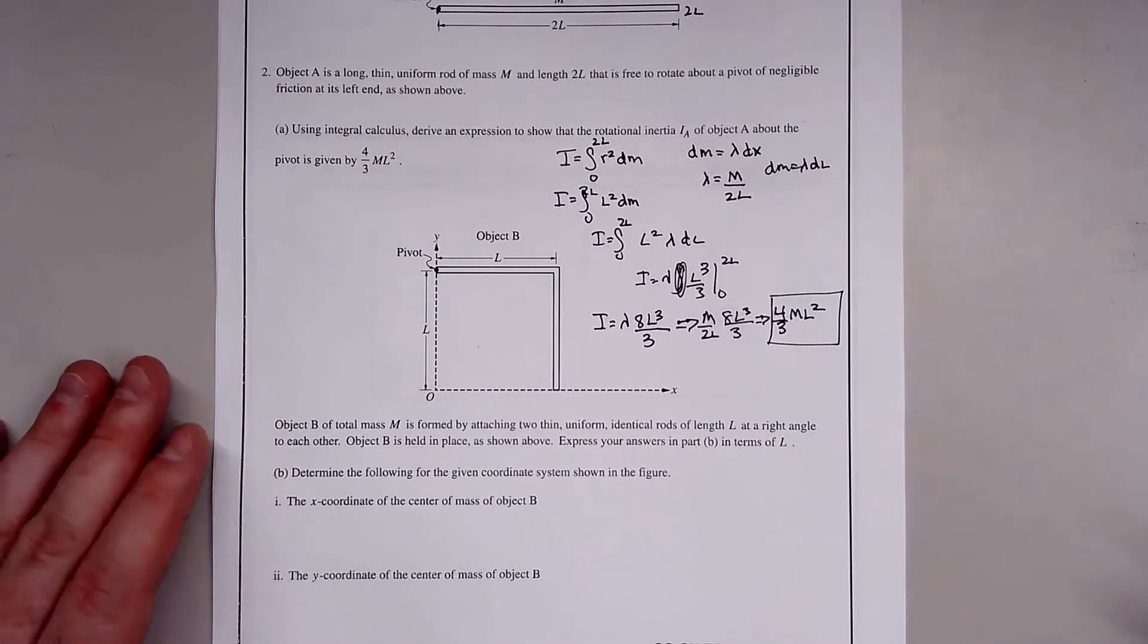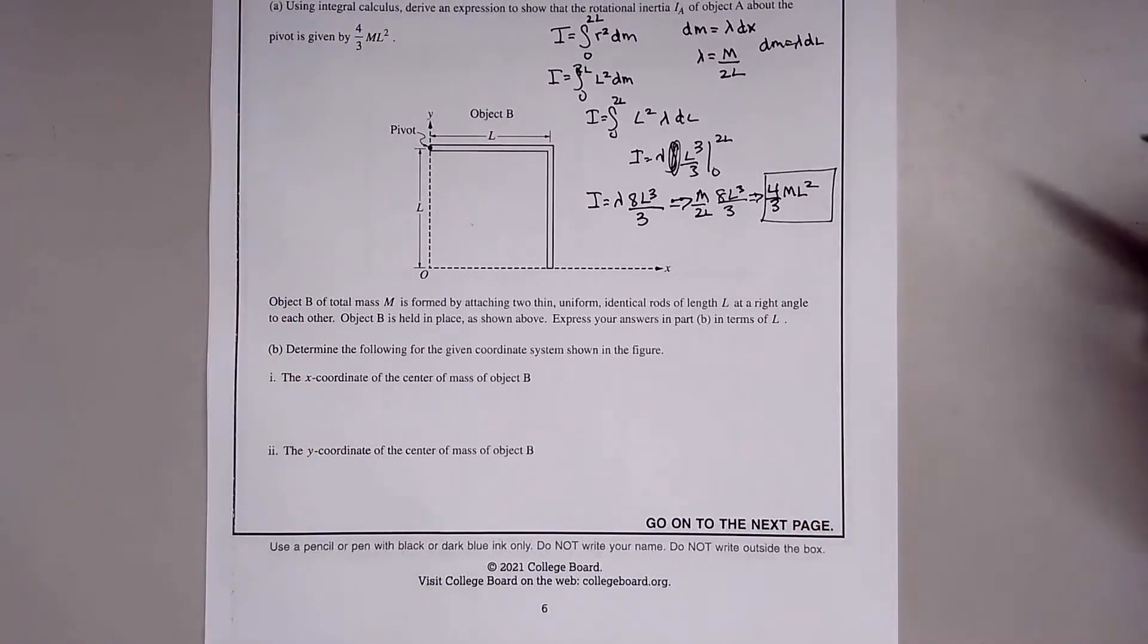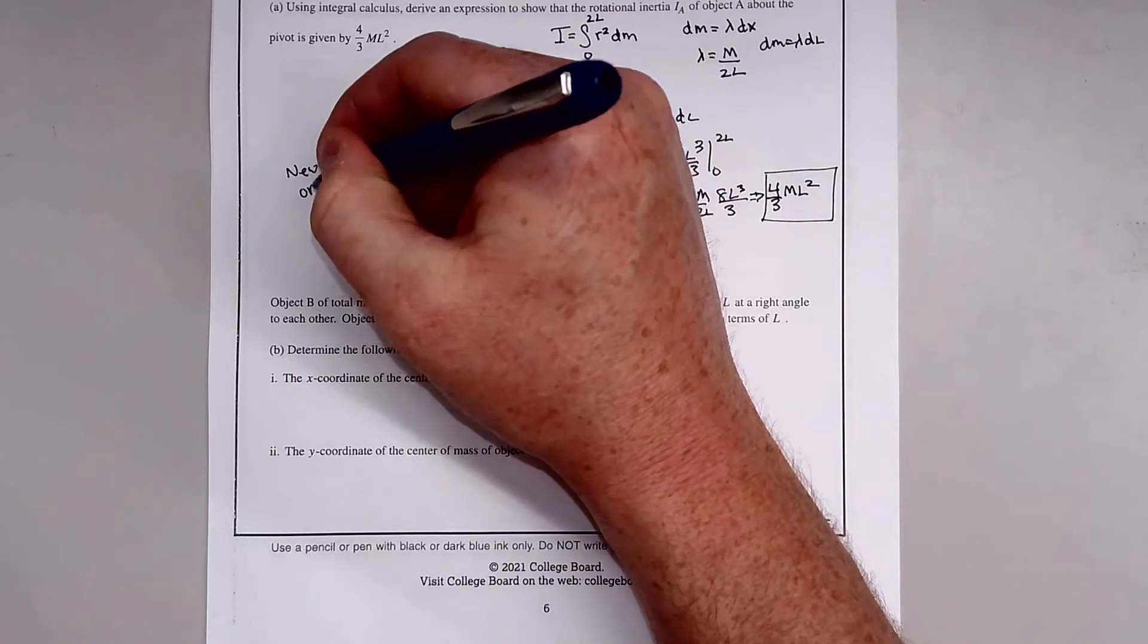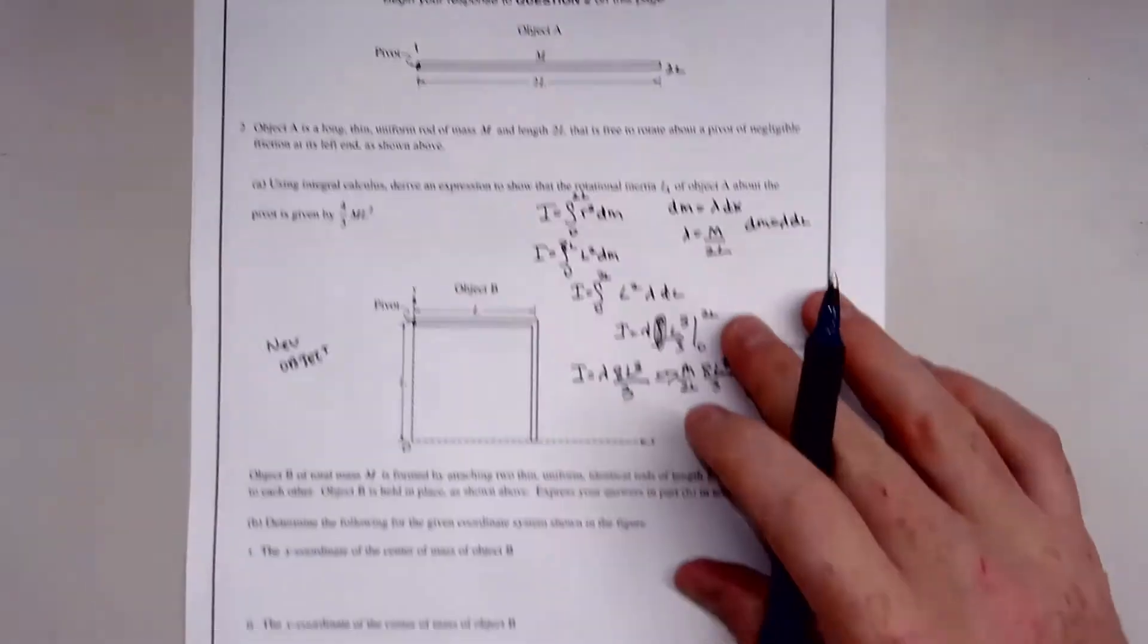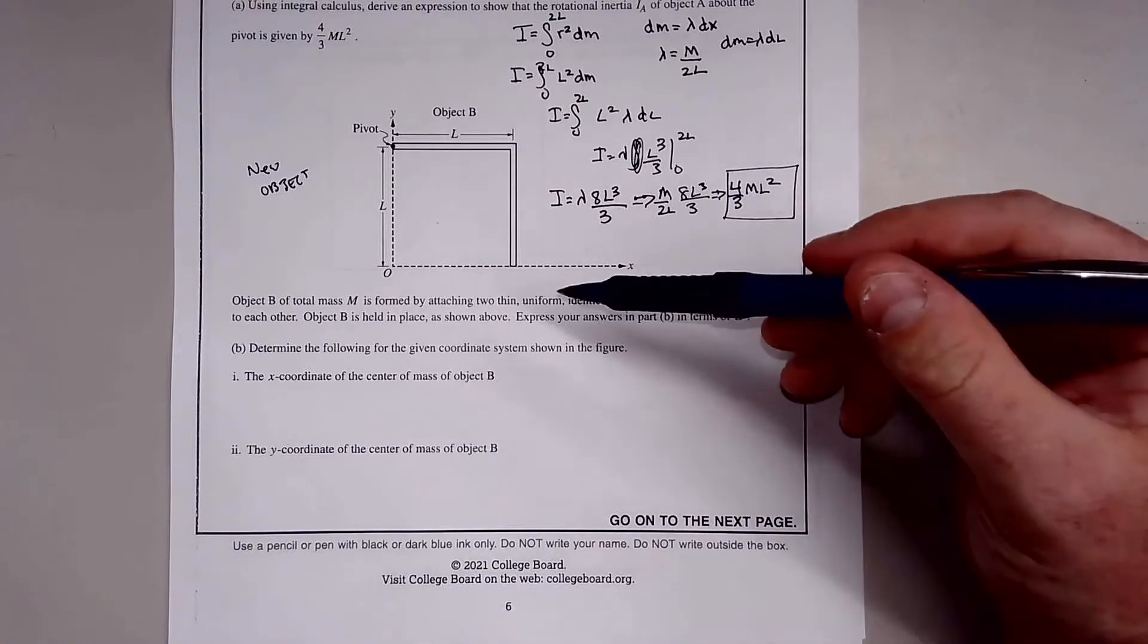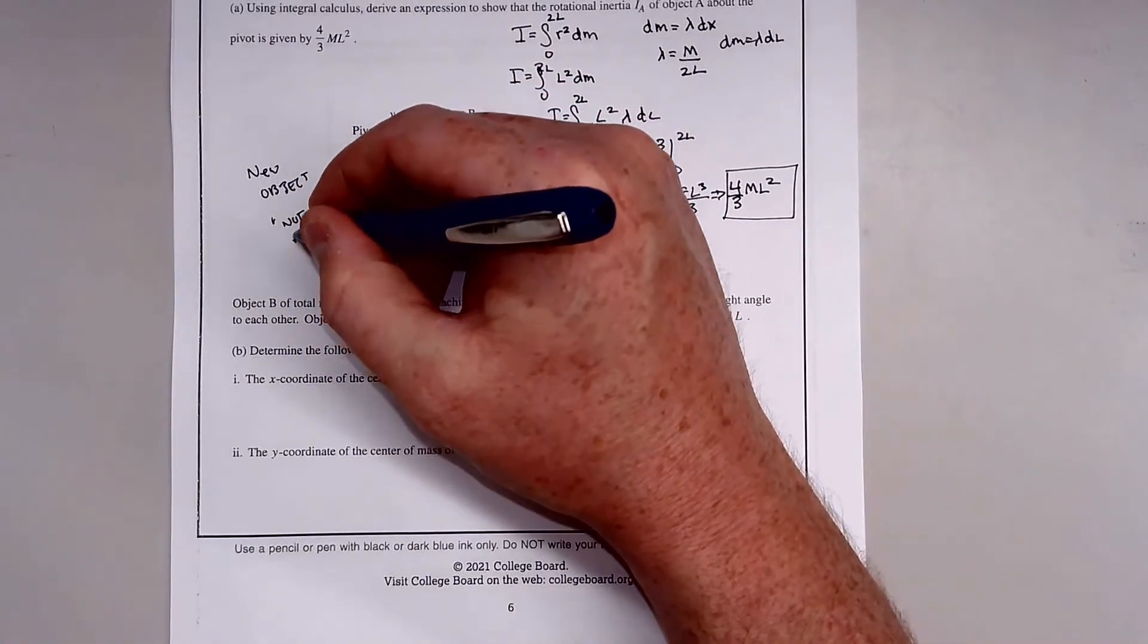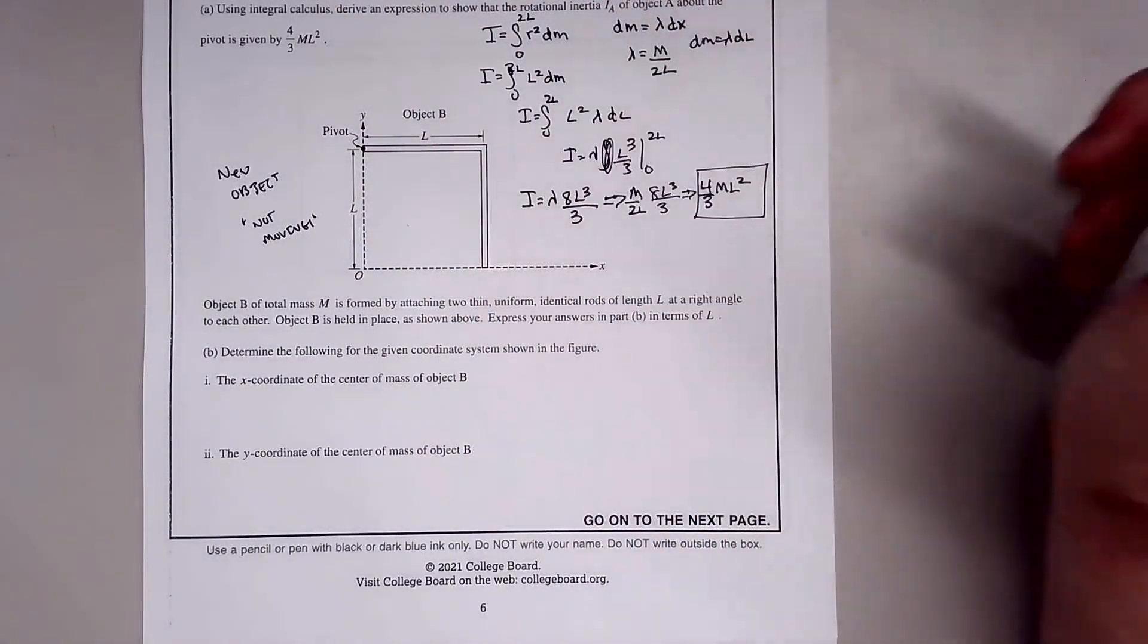Let's do the second part. Now object B of mass M is formed by attaching two thin uniform identical rods at a right angle to each other. Object B is held in place as shown. This is a new object and it's not moving.